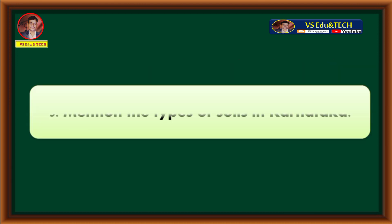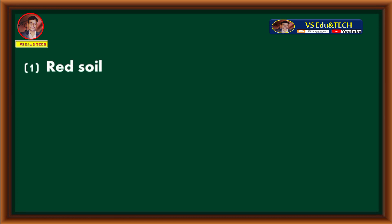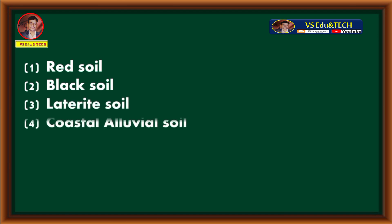Next question: mention the types of soils in Karnataka. The four types of soils found in Karnataka are: red soil, black soil, laterite soil, and coastal alluvial soil.